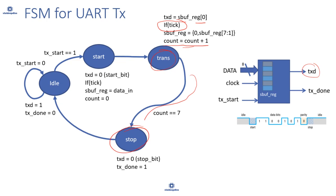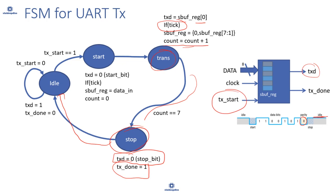In the stop state, we send the stop bit by pulling txd high to 1 and assert tx_done=1 to indicate transmission is complete. Once the stop bit is done, we go back to the idle state — the line is pulled high and stays idle until the next data arrives from the transmit or bus side.